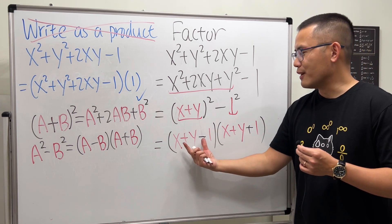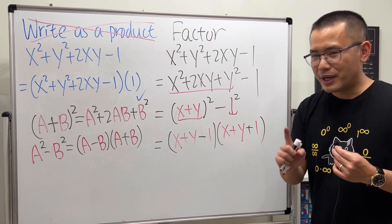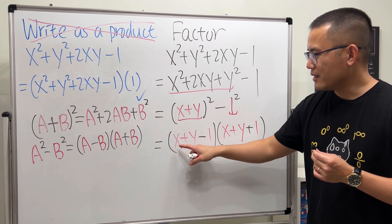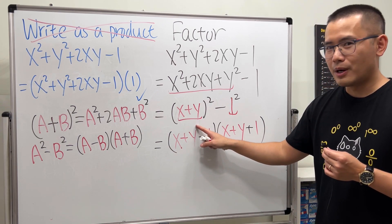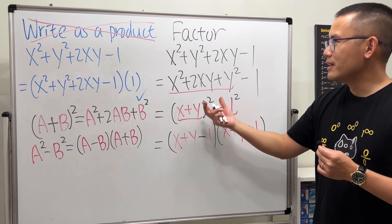Now we have a product of two things, and the key right here is that notice the degree: right here is x to the first power, y to the first power. The degree is smaller than the original, and that's the main point of factoring a polynomial.